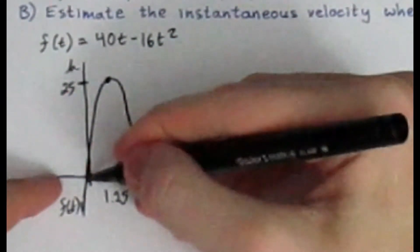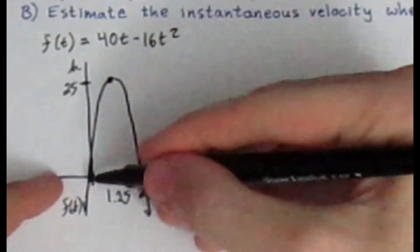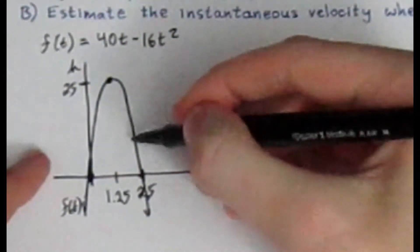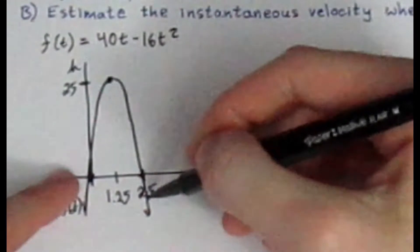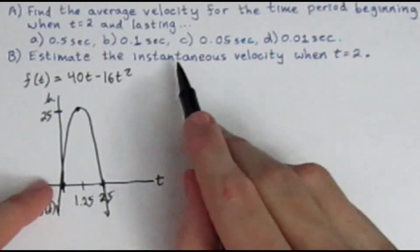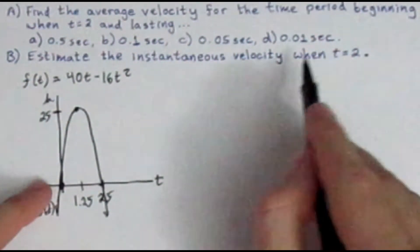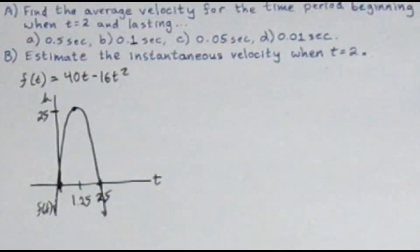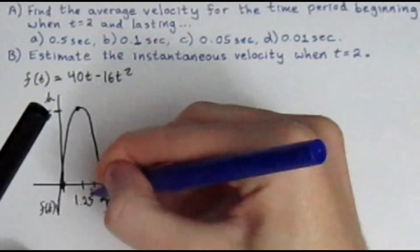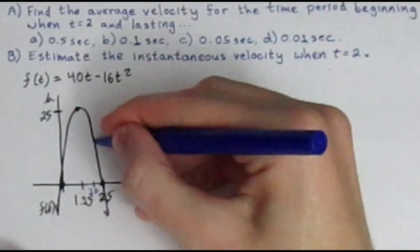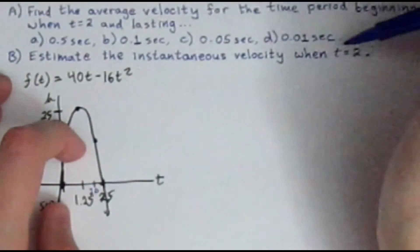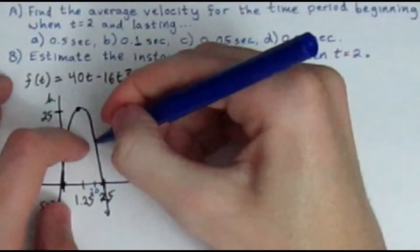What that means is the height starts at 0, then the ball is thrown upward, reaches 25 feet in the sky, and then comes all the way back down to 0 at 2.5 seconds later. But what it's asking us to find is the instantaneous velocity when t equals 2. T equaling 2 seconds is about right here on the graph, and we're asking what is the velocity at this point.